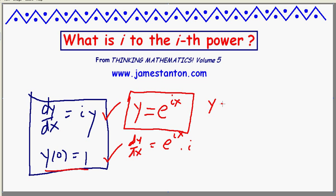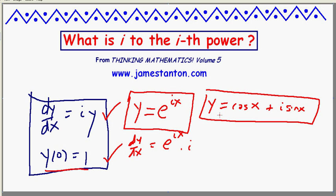But note, so is y equals cosine of x plus i sine of x. Let me check. What's the derivative of this guy? Well, the derivative of cosine is negative sine plus i times derivative of sine, which is cosine.